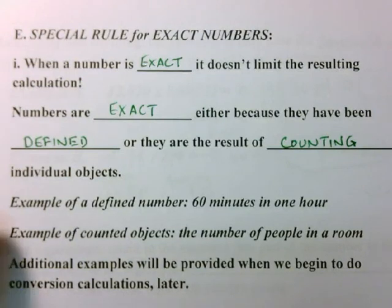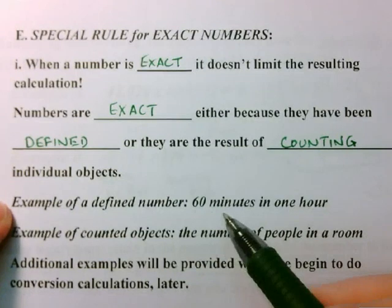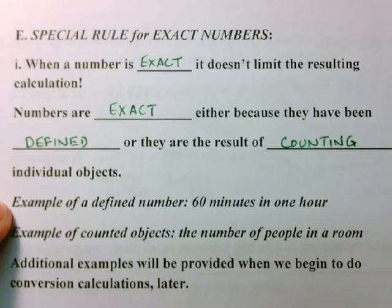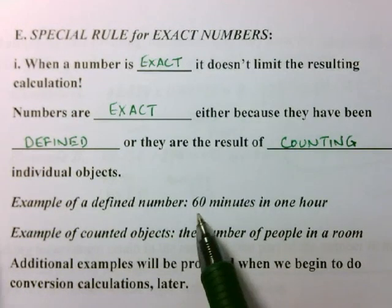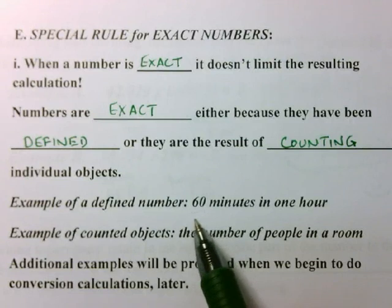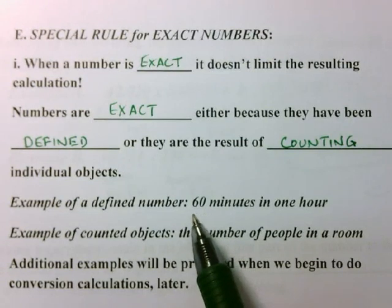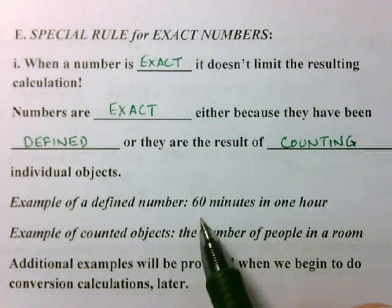Here's an example of a number that has been defined. Sixty minutes is the definition of how many minutes are in one hour. If we use the rules that we originally learned, we would say that that number only has one sig fig in it, because that zero is trailing and there is no decimal in the number. And then we would base any calculations that we did on the fact that that number has only one significant figure.